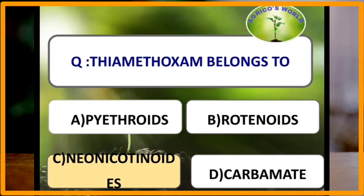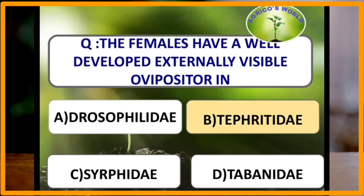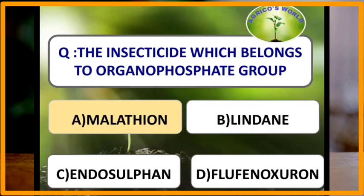Thiamethoxam belongs to the class neonicotinoids. The female has a well-developed externally visible ovipositor in Tephritidae. The insecticide which belongs to the organophosphate group is malathion.